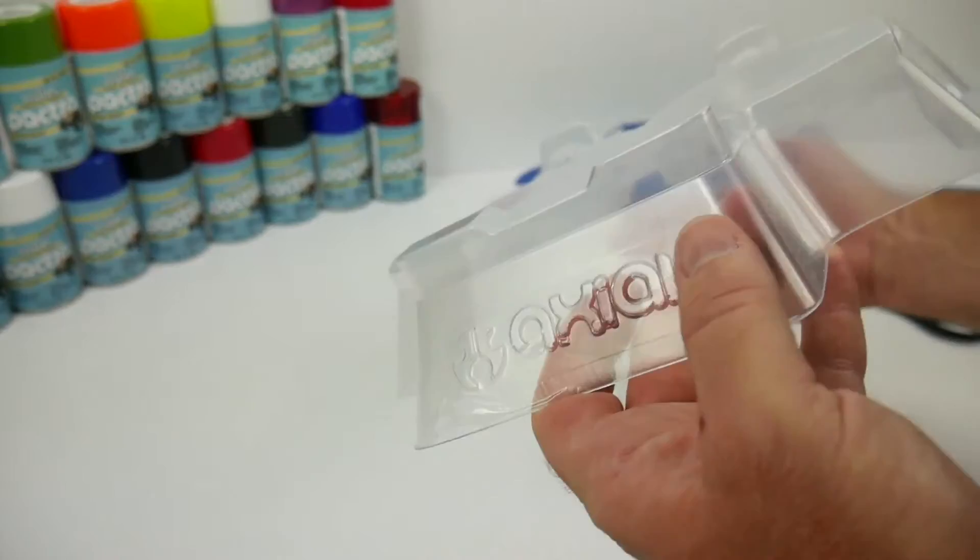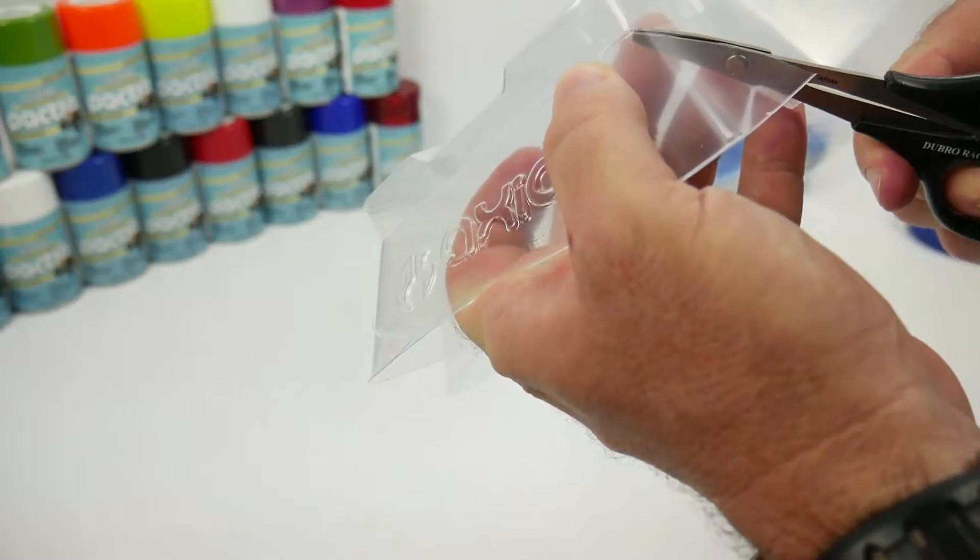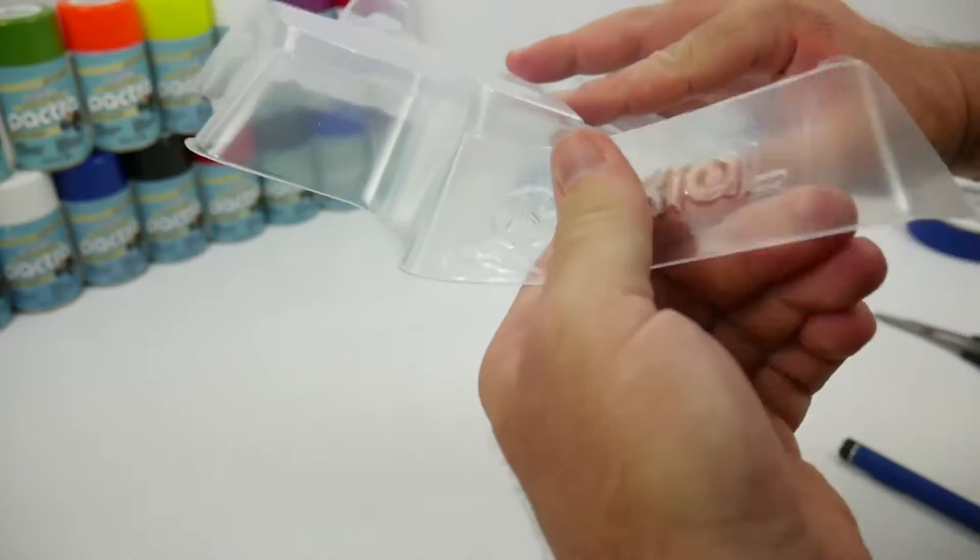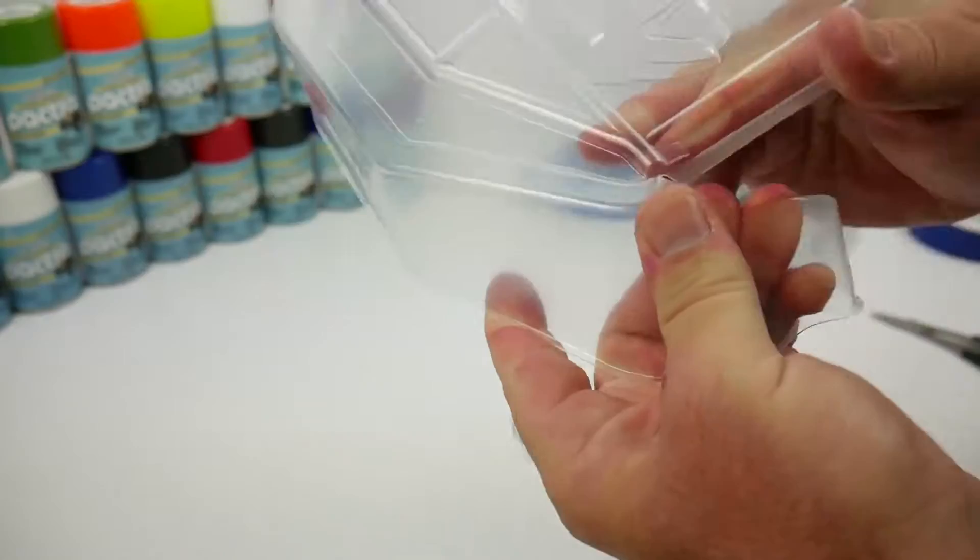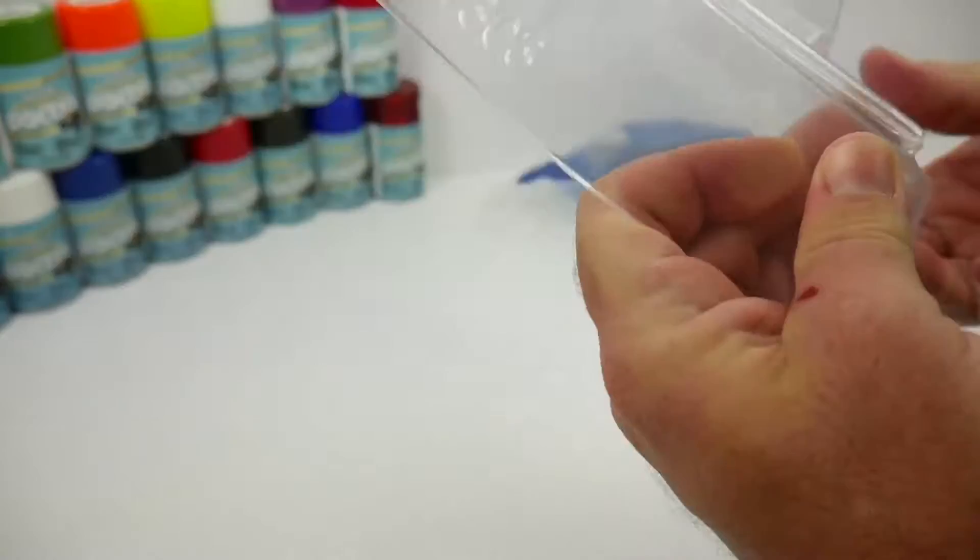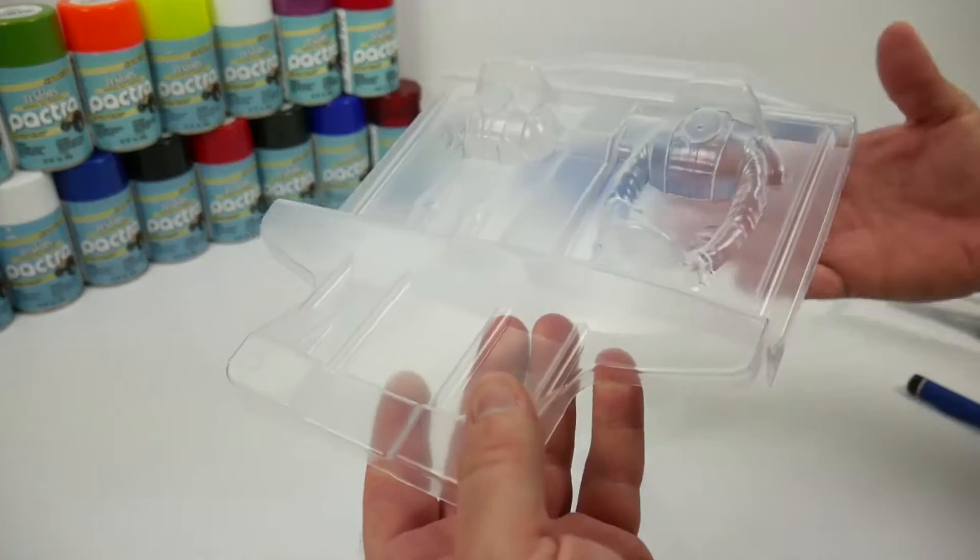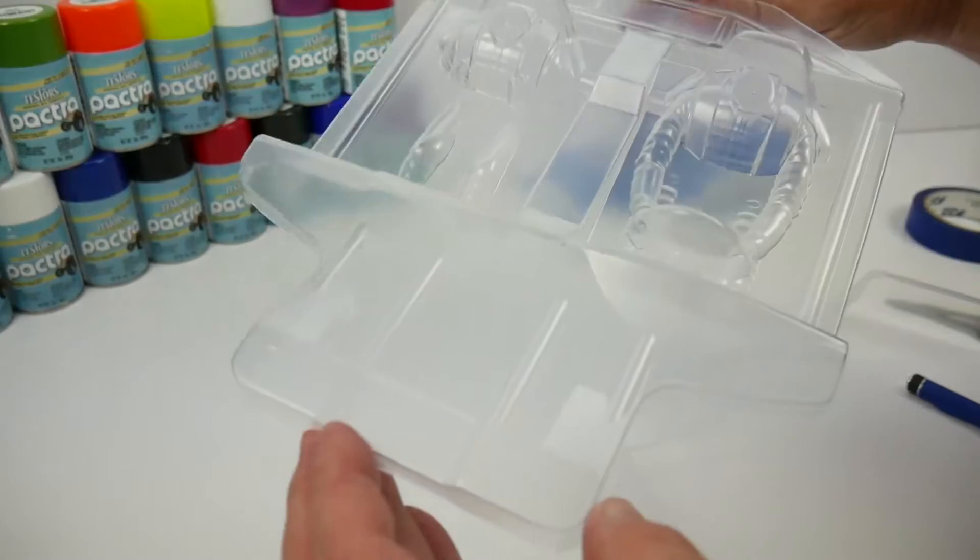All right, so that is that. We went ahead and scored all the way around it. Now it's a matter of just getting that score line going. I usually take my Lexan scissors and just go ahead and cut up to that score line just like that. And it's just a matter of just tearing around the score. Start easy and then you'll start to see it just go straight on the score line. And there you have it. There is the actual body section that we will be painting. You'll notice it's a lot smaller now. So you can concentrate all of your painting efforts on this small section.